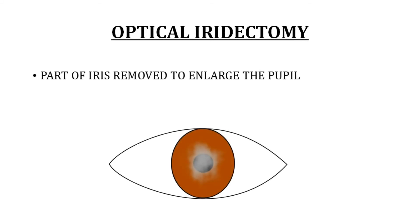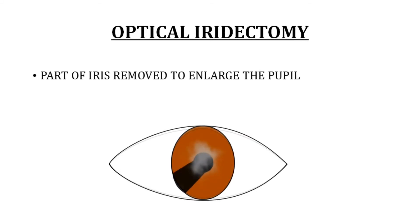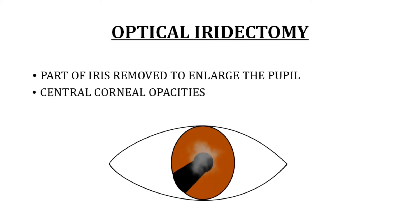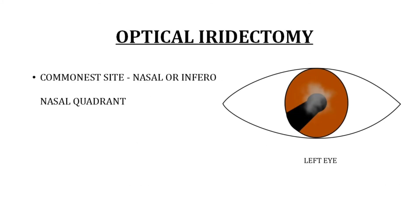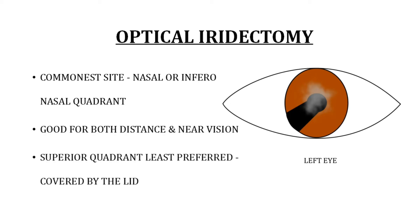Optical iridectomy is a good surgical alternative to keratoplasty. A part of the iris is removed to enlarge the pupil and allow peripheral rays of light to reach the retina. It is beneficial in central corneal opacities that obstruct the visual axis, provided the peripheral cornea in the quadrant of the iridectomy is clear. An area of isolated peripheral cornea can give a visual acuity of almost 6/9. The commonest site is the nasal or infero-nasal quadrant, which is good for both distance and near visual acuity. The superior quadrant is least preferred as it is covered by the lid.